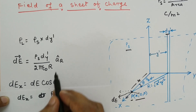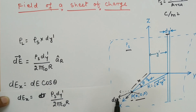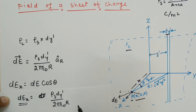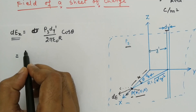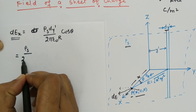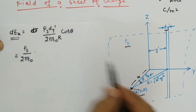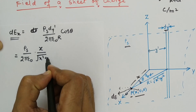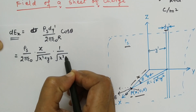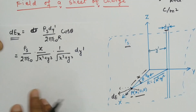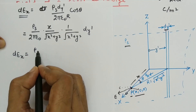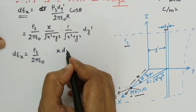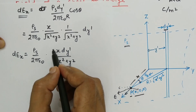So dEx = (ρs · dy') / (2πε₀ · R) · cosθ. Substituting cosθ = X / √(X² + y'²) and R = √(X² + y'²), we get dEx = (ρs · X · dy') / (2πε₀ · (X² + y'²)).